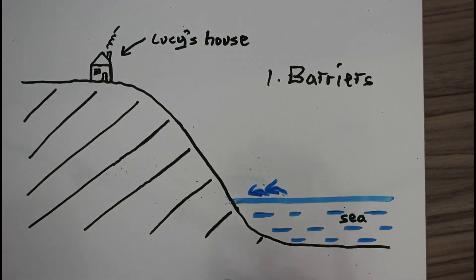Finally, here's another soft engineering method. Managed retreat is where you simply allow erosion to take place because you've realised that the value of buildings isn't worth the money to protect. The advantage is it's very cheap or free, and it encourages the natural development of the beach or salt marsh. The disadvantage is that people may lose their buildings or land and may need to be repaid for their losses.